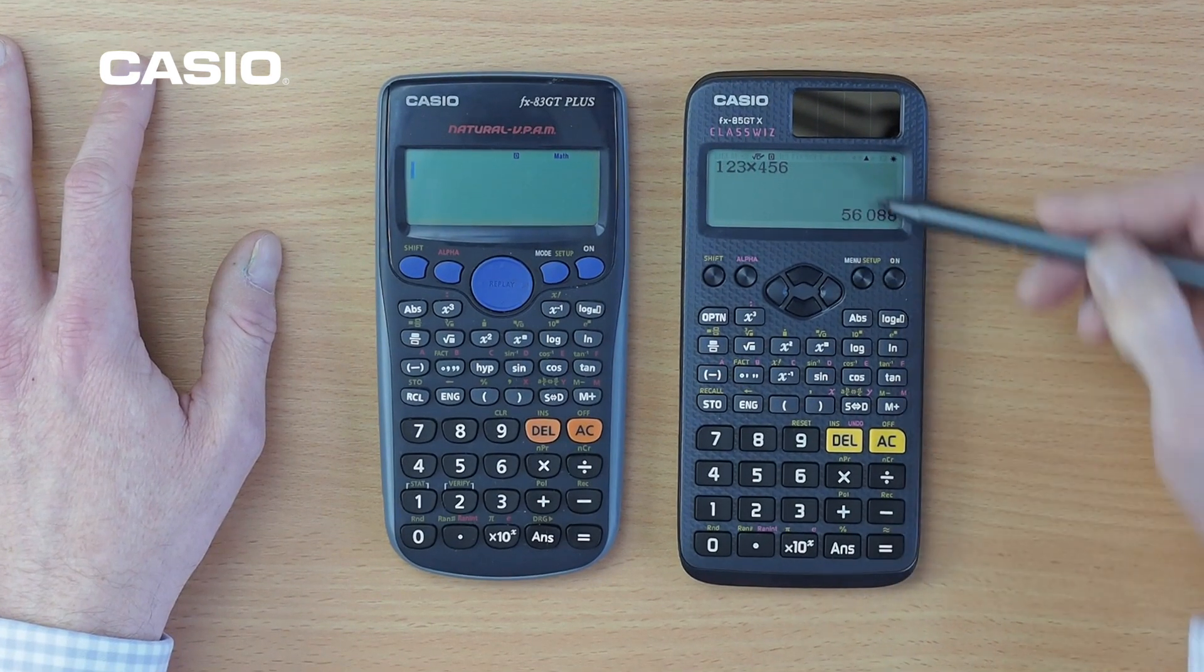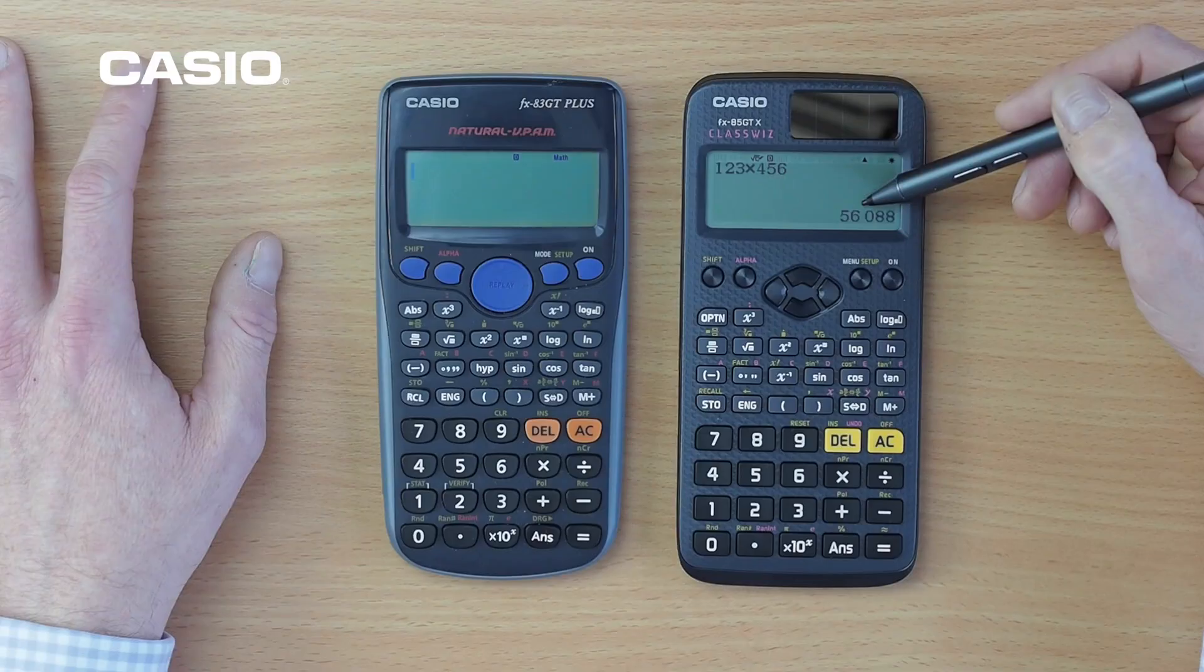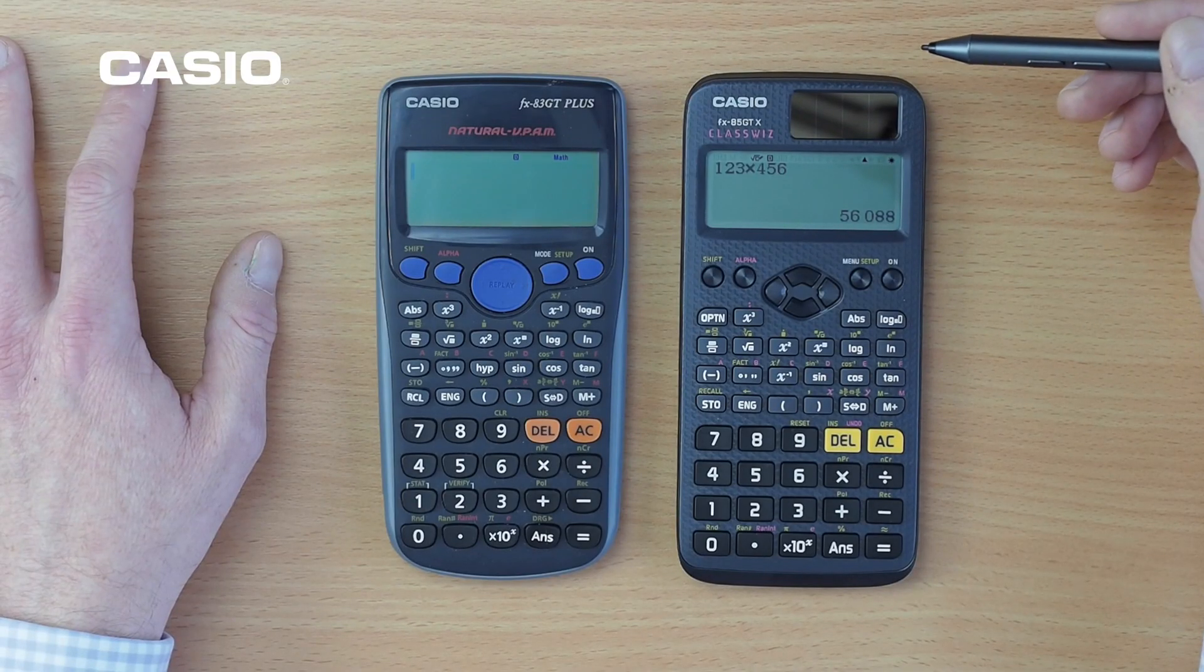Now if we press equals now, we've now got a digit separator between the thousands and the hundreds, making it much easier for your students to see the place value of your answers.